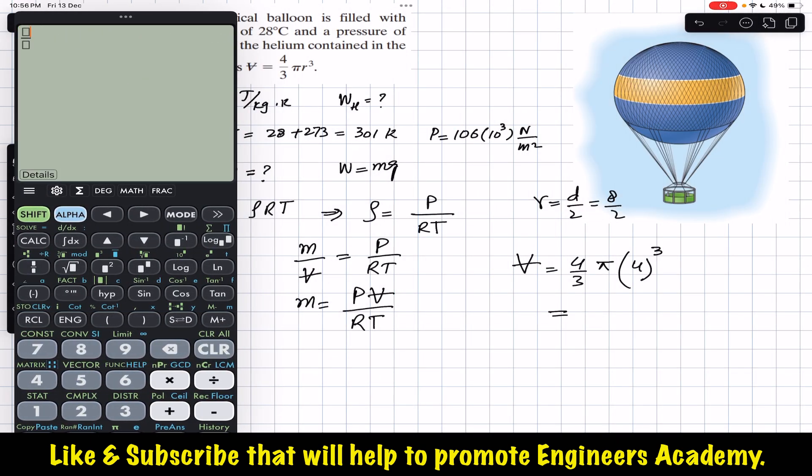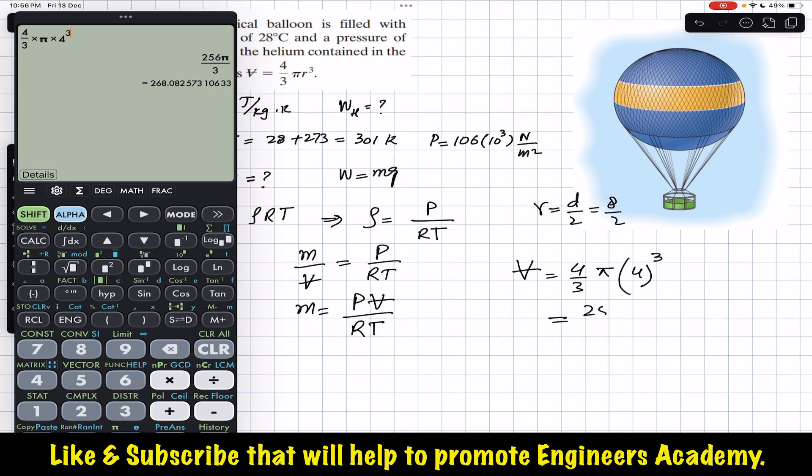So this gives us volume equal to (256/3)π, and the units will be in meter cubed, since the radius is in meters as well. So since the diameter is given in meters...